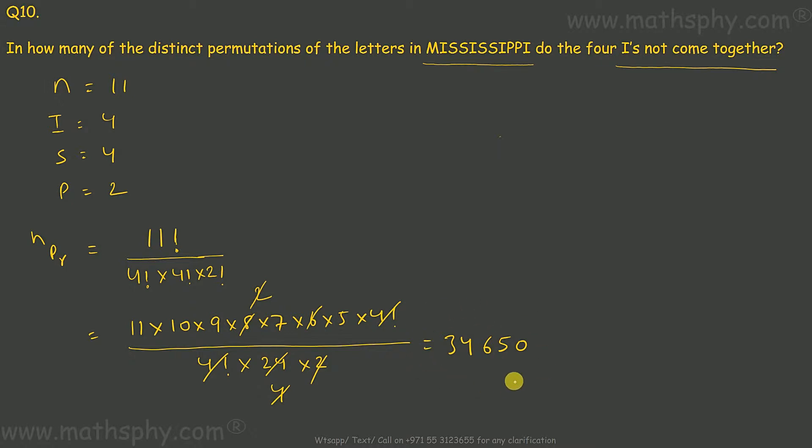Now, out of these arrangements, there would be many arrangements where all the I's are coming together. Let's write Mississippi in this manner.